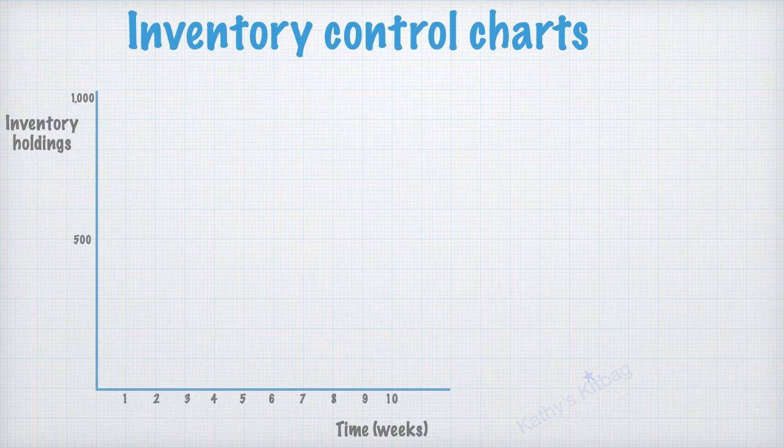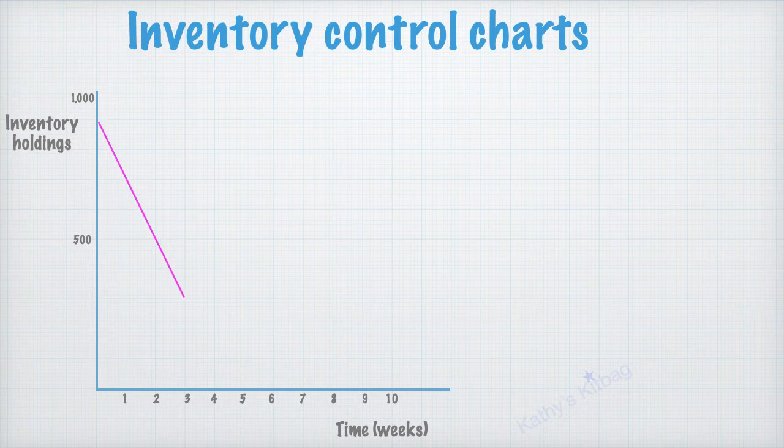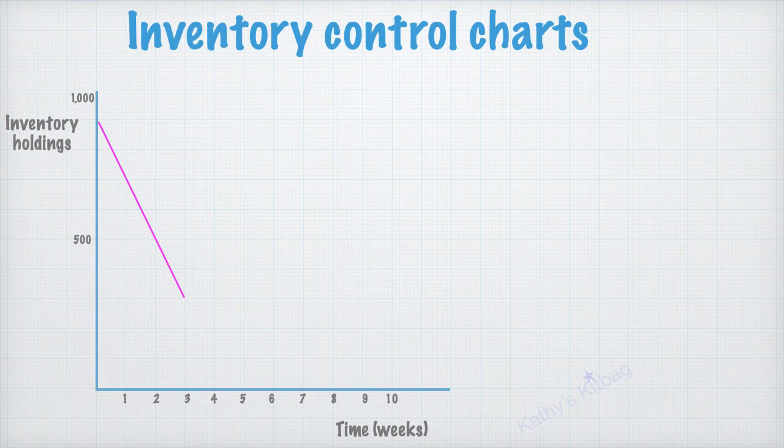So the next thing that we look at on an inventory control chart is stock being used. So this pink line that's sloping down is where the business is using up the stocks that they've got. So it's starting at 900 and then over the course of three weeks they are using up down to 300.